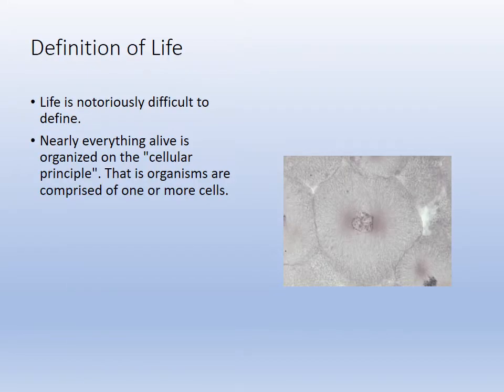So it's difficult to understand, but there's a cell that has basically a nucleus in the center. You have a cell membrane, and then you have protoplasm filling the cell up. Different organelles could be there — simple or complex — but that's the general layout for the eukaryotic cell.